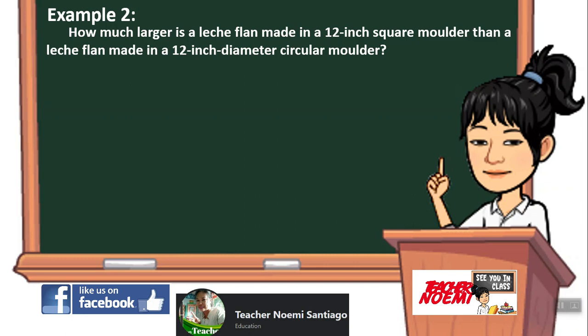Example number 2: How much larger is a leche flan made in a 12-inch square molder than a leche flan made in a 12-inch diameter circular molder?